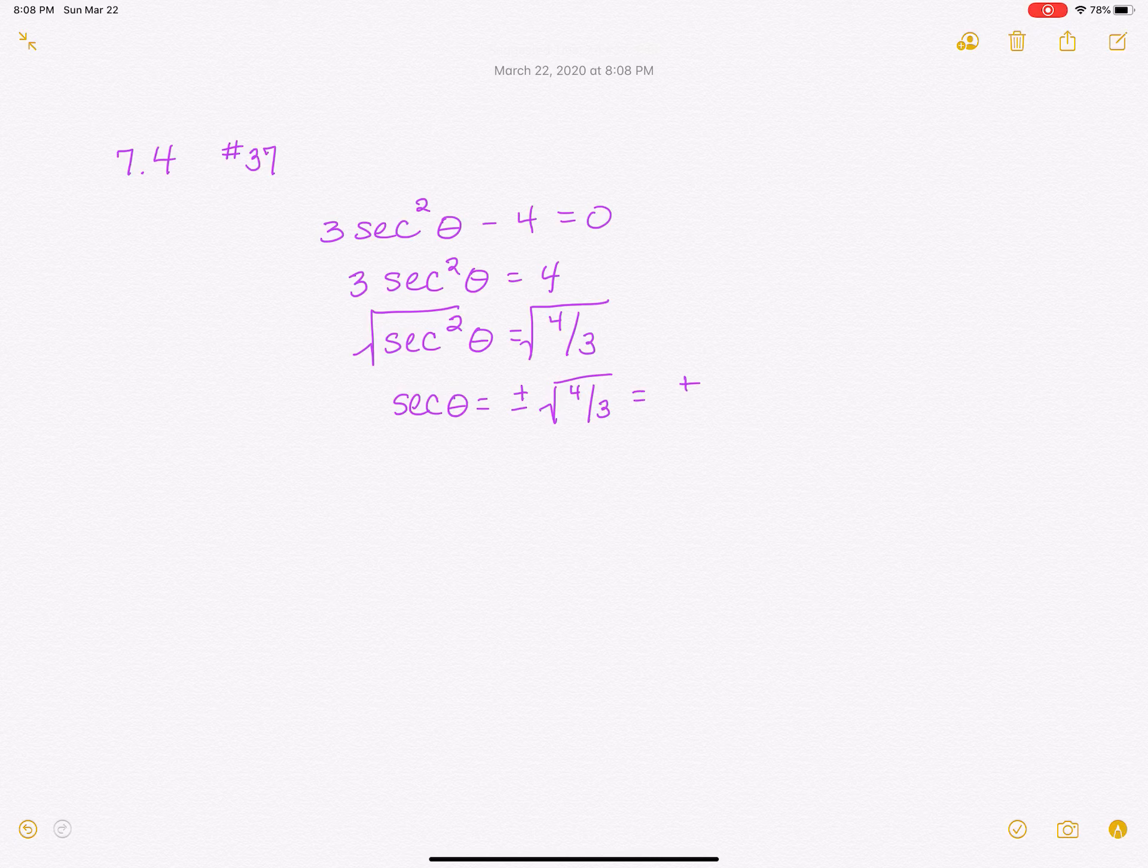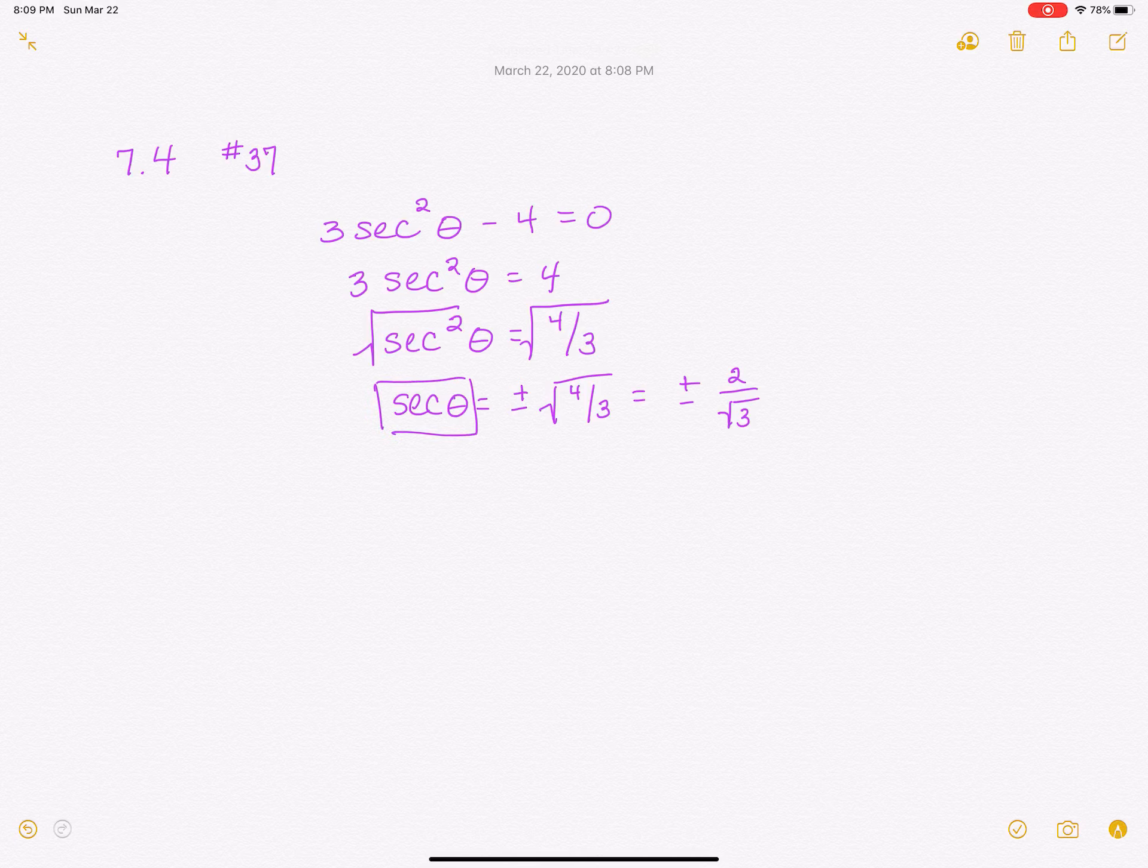Now I can clean that up. We know the square root of 4 is 2. And so I've got the square root of 3 on the bottom that doesn't simplify. Now if I'm looking at this, I'm thinking secant of theta. You don't even have that button on your calculator.